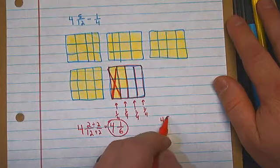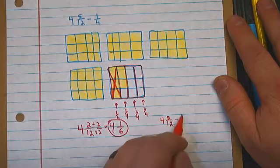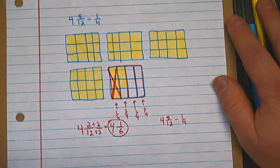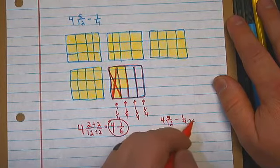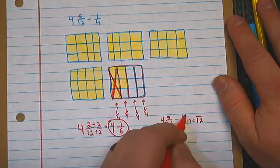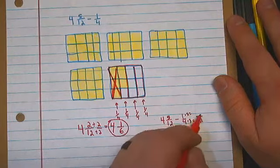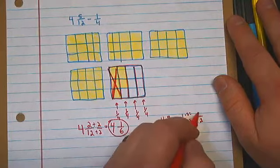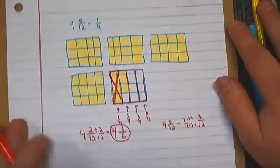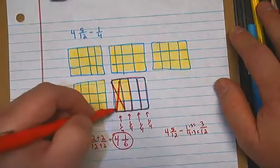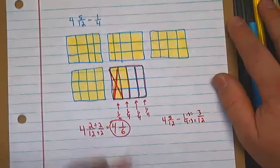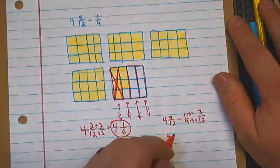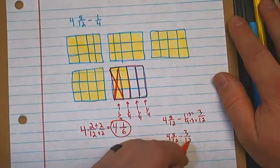Let's do four and five-twelfths minus one-fourth. And I know that four times three gets me 12, right? So let me do that to the top as well. One times three is three, so three-twelfths. And if you look here, didn't I subtract three-twelfths right here? Yeah, that's what that is. A fourth is three-twelfths.